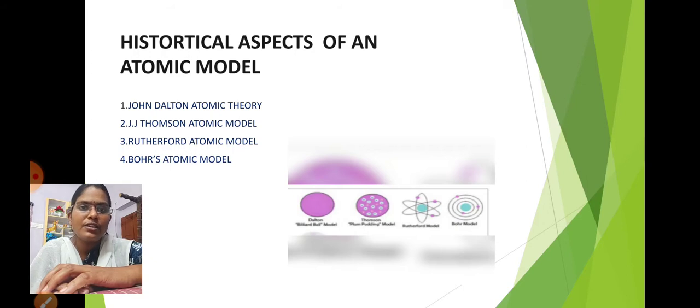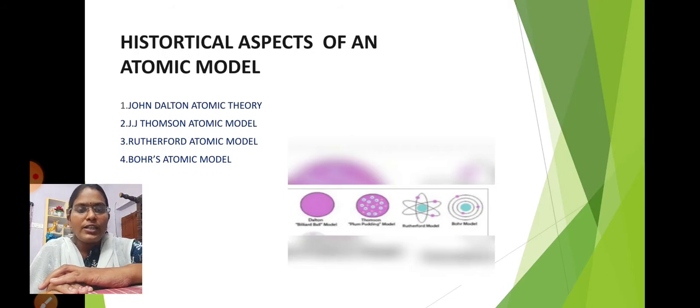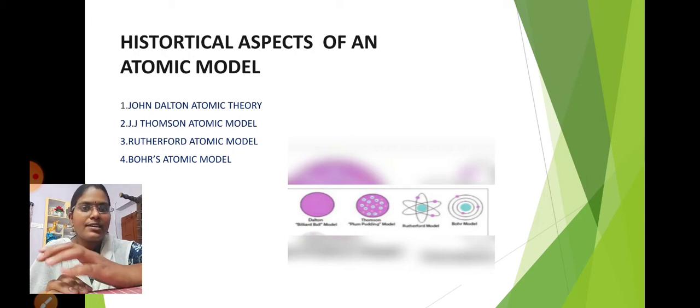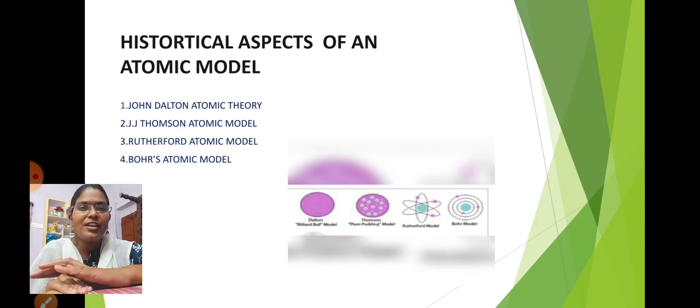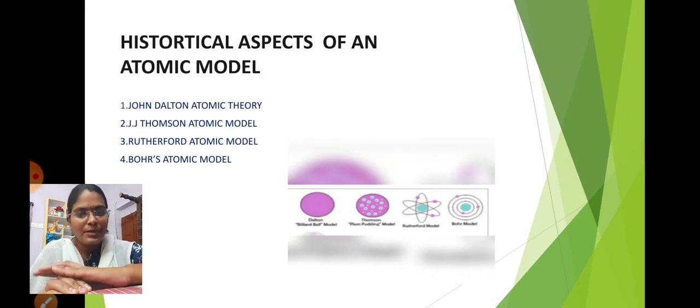In this session, I am going to discuss John Dalton's Theory, J.J. Thomson, Rutherford, and Bohr Atomic Models — these four atomic models. The first one is John Dalton's Atomic Theory, also called the Billiard Ball Model. The second is J.J. Thomson's model, also called the Plum Pudding Model. The third is Rutherford's Atomic Model, and the fourth is Bohr's Atomic Model.